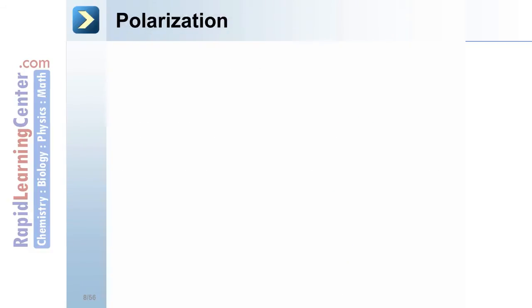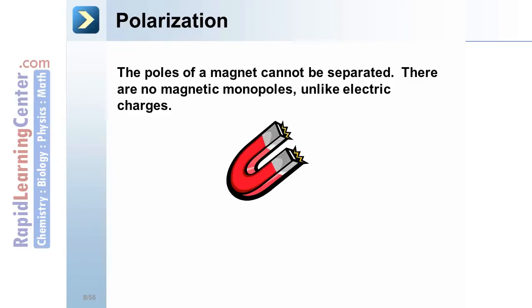Polarization. The poles of a magnet cannot be separated. There are no magnetic monopoles, unlike electric charges, where you can have a single, isolated, positive charge, say. A north pole will always be accompanied by a south pole for magnetism.